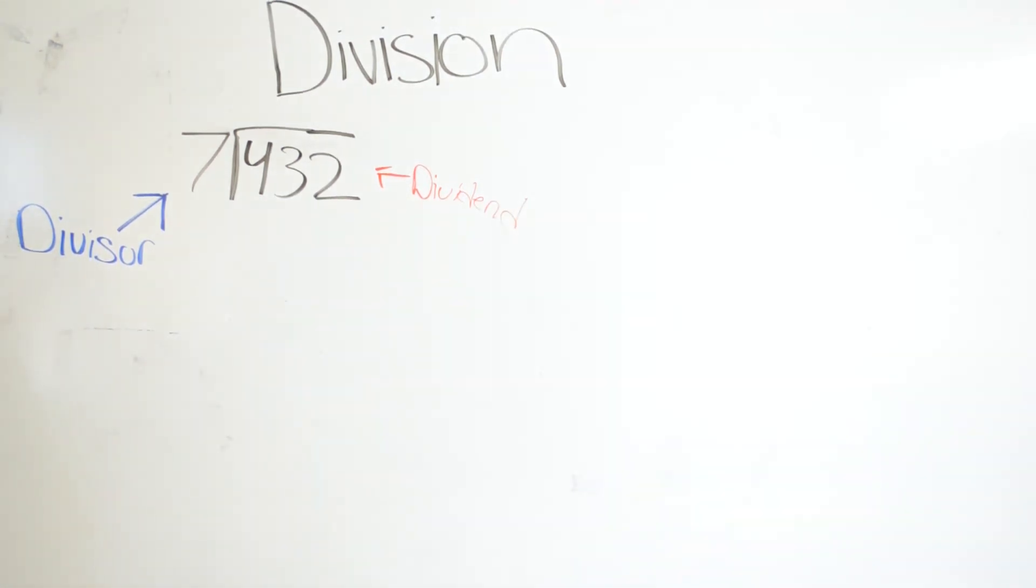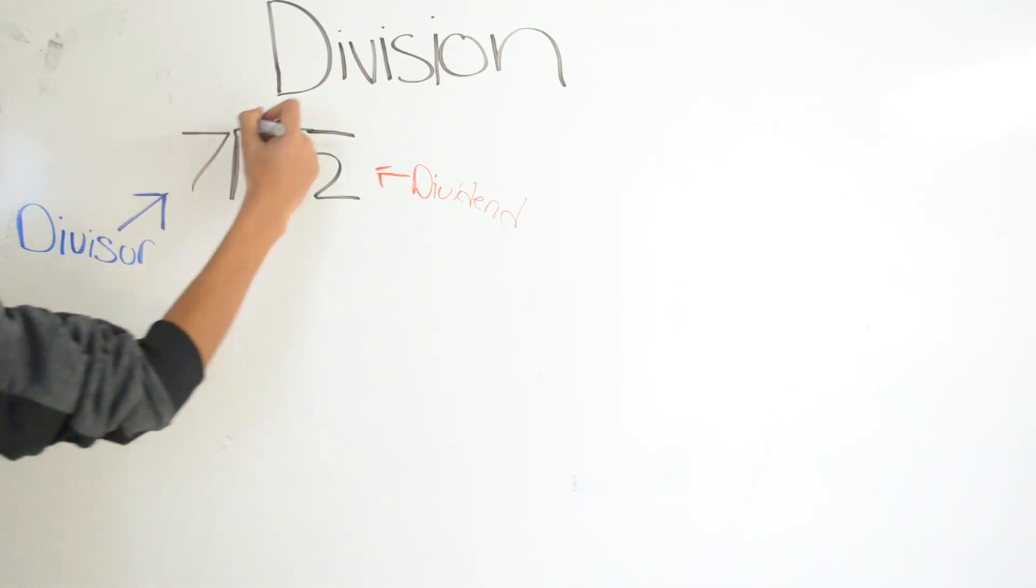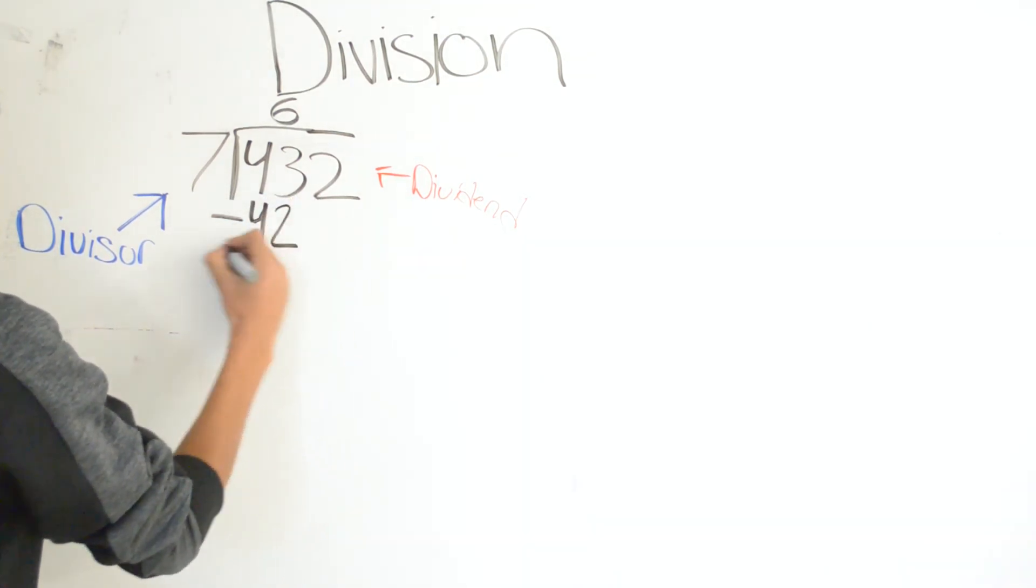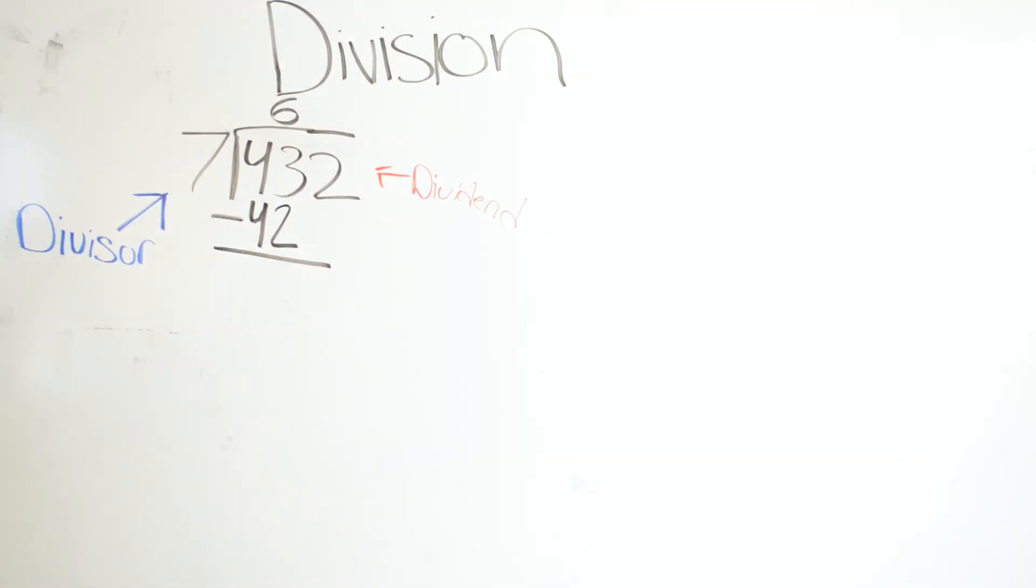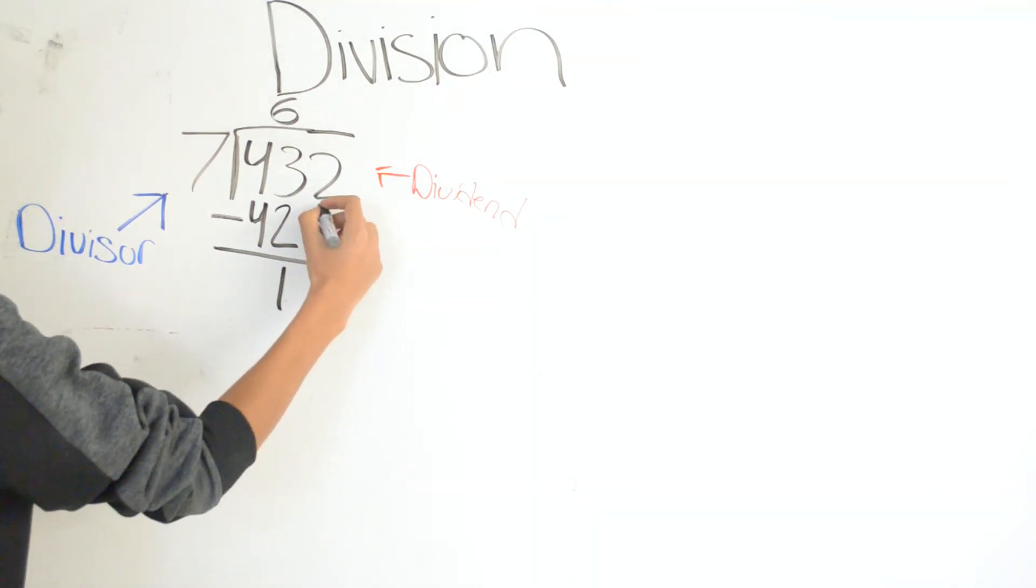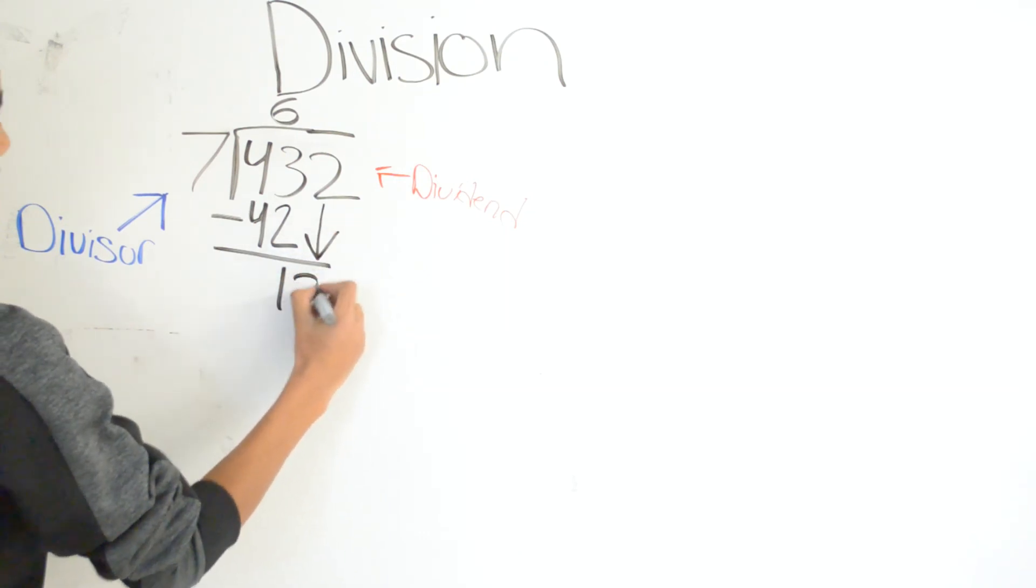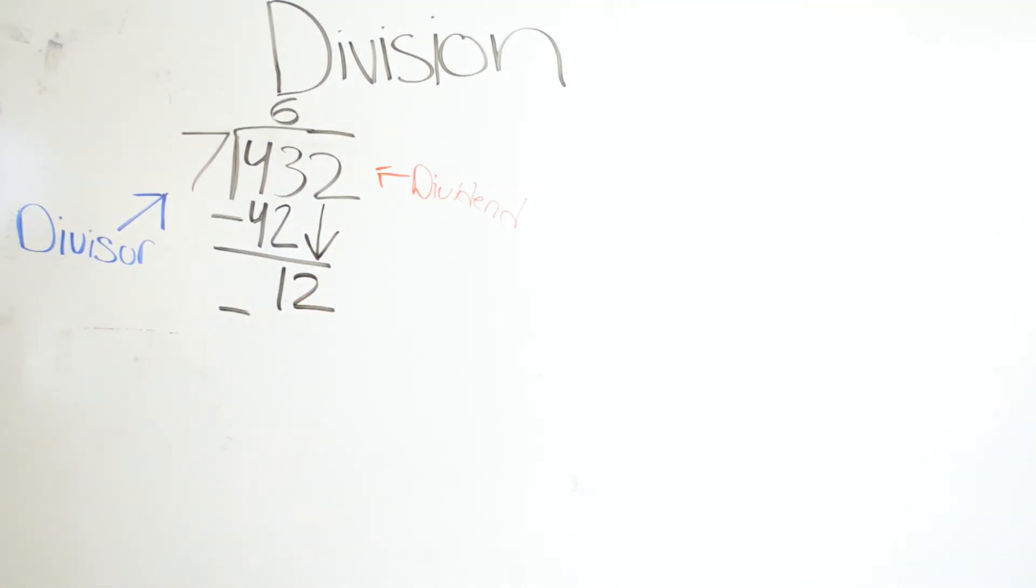7 goes into 4 zero times, but 7 goes into 43 six times, because 7 times 6 is 42. So 43 minus 42 is 1. Bring down the 2. And we have 12 now. So 7 goes into 12 how many times?